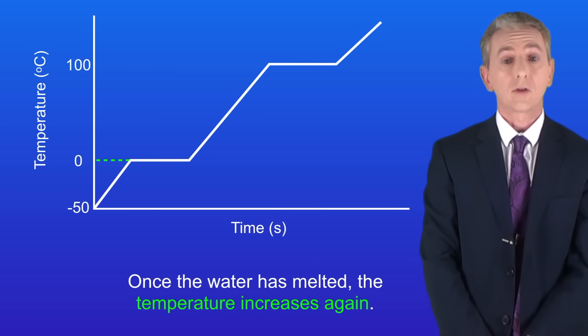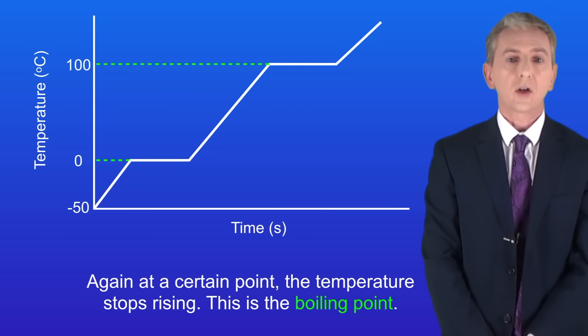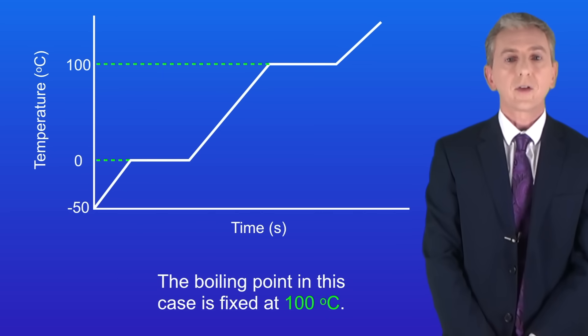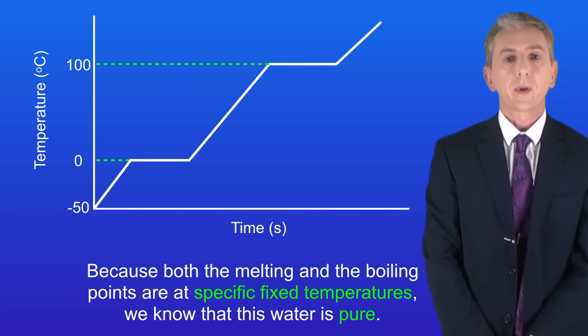Once the water has melted the temperature increases again and at a certain point the temperature stops rising. This is the boiling point. As you can see the boiling point in this case is fixed at 100 degrees celsius. So because both the melting and the boiling points are at specific fixed temperatures we know that this water is pure.